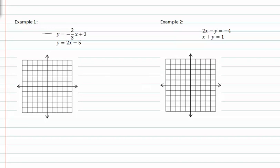In example one, we're given two equations of lines. Looking at b or the y-intercept, we see that the first line crosses the y-axis at three. Its slope is a rise of negative two and a run of positive three.